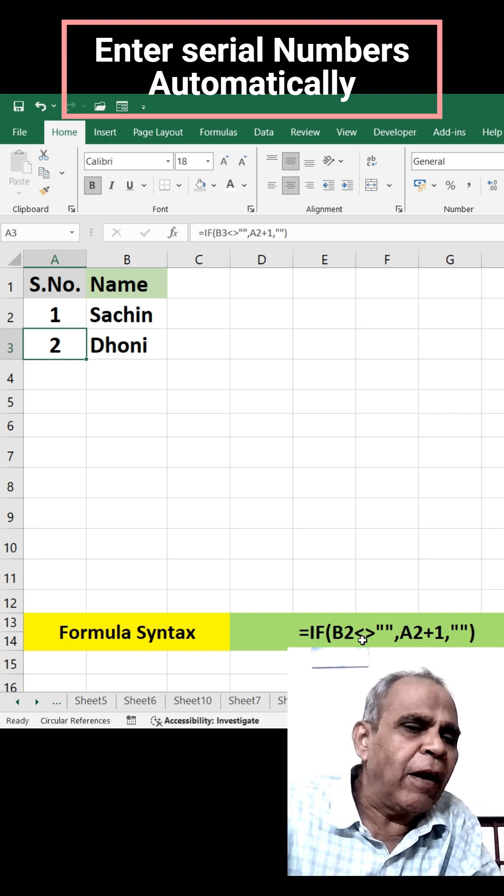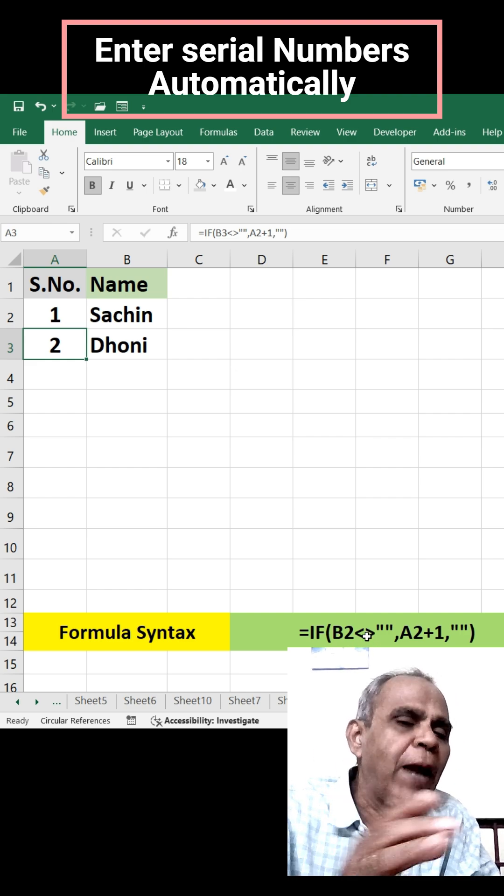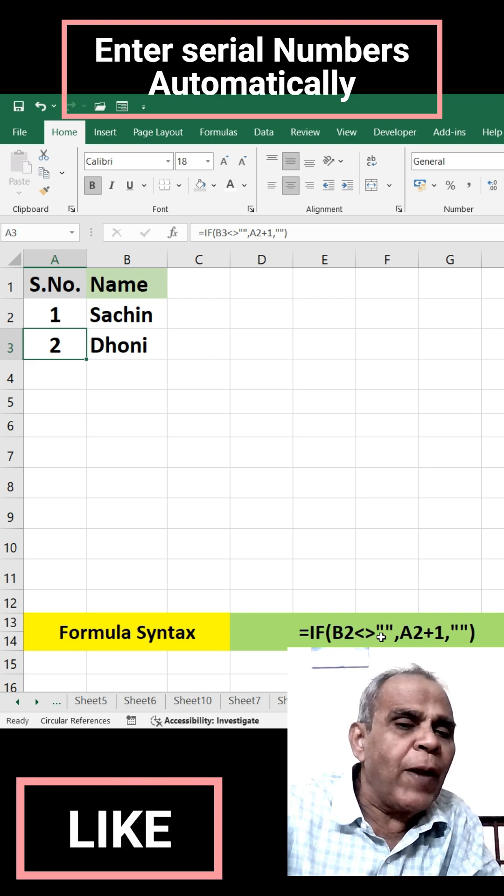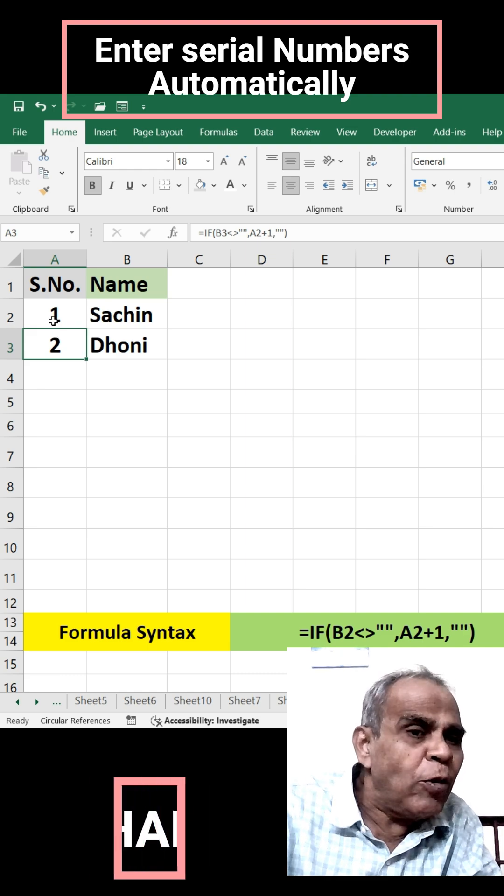it will be less than and greater than together, meaning not blank. If it is not blank, then in A3, you enter A2 value plus 1.